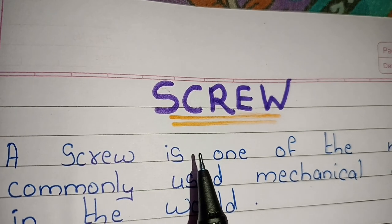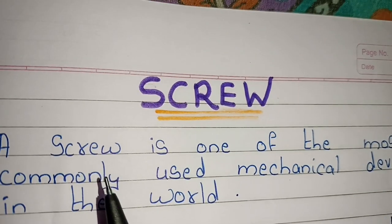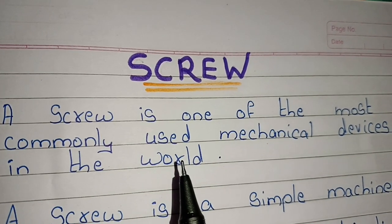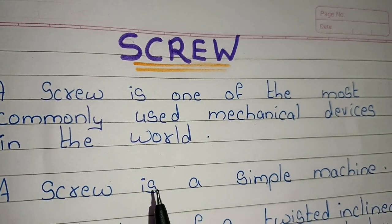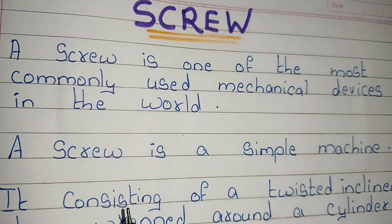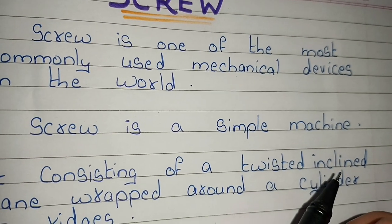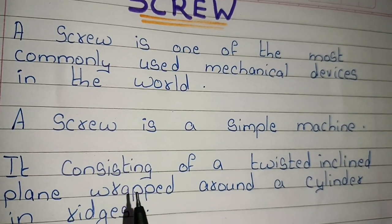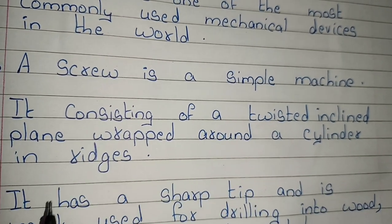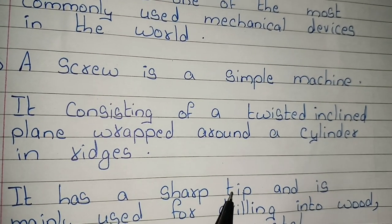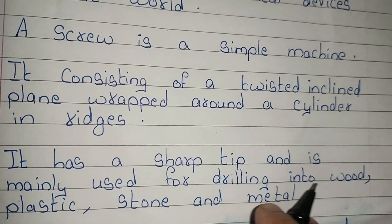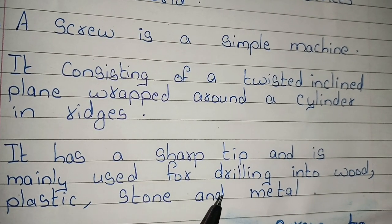A screw is one of the most commonly used mechanical devices in the world. A screw is a simple machine, consisting of a two-stage inclined plane wrapped around a cylinder in ridges. It has a sharp tip and is mainly used for drilling into wood, plastic, stone, and metal.